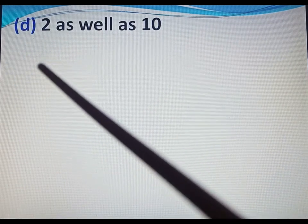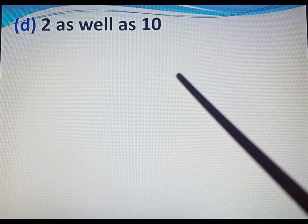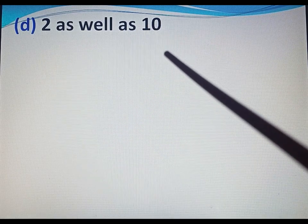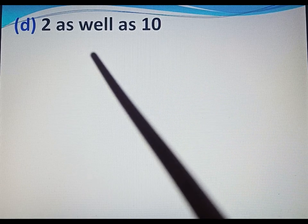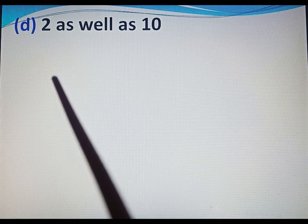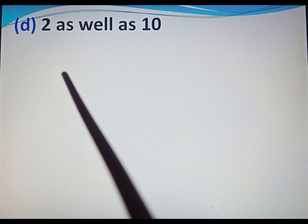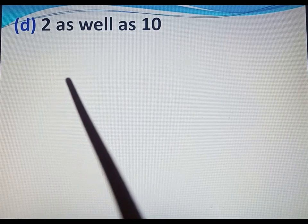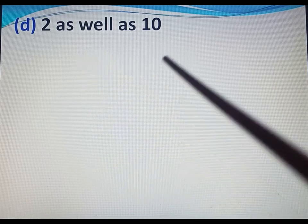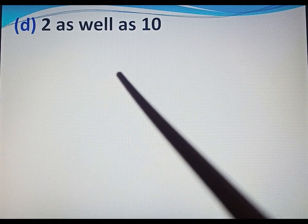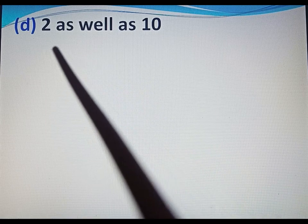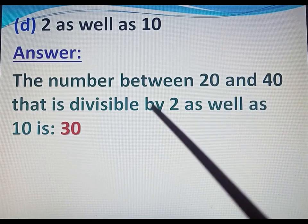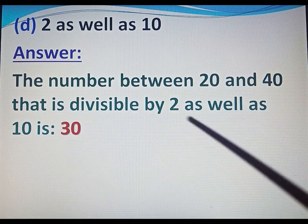Part D: find numbers between 20 and 40 divisible by 2 as well as 10. For divisibility by 10, the 1's digit must be 0, so digits 2, 4, 6 or 8 are excluded. Since 20 and 40 are not included, the only number left is 30. So the number between 20 and 40 that is divisible by both 2 and 10 is 30.